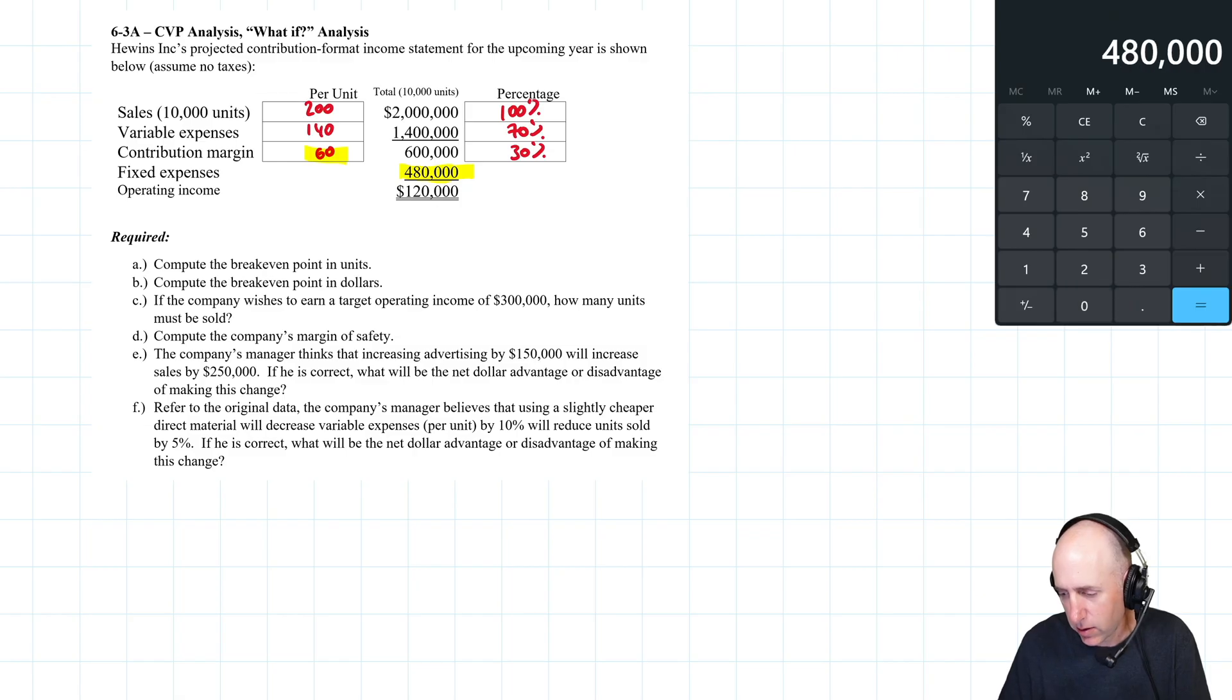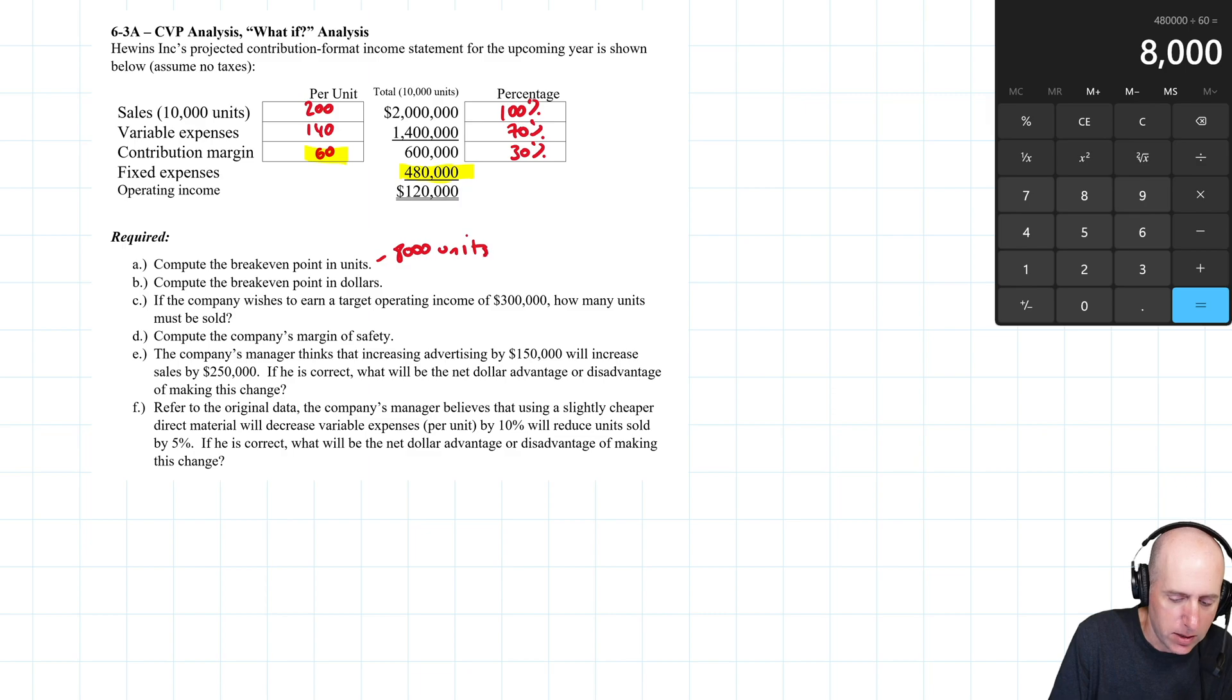So $480,000 divided by 60 means we need to sell 8,000 units. Our breakeven point in units is 8,000 units.